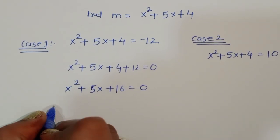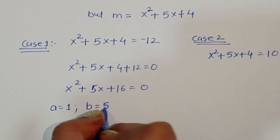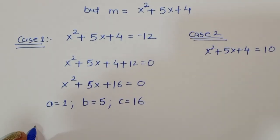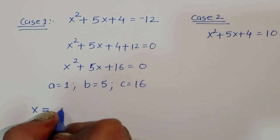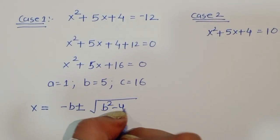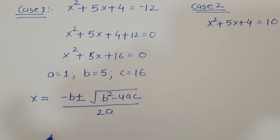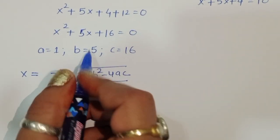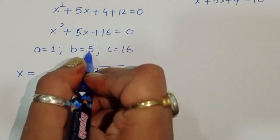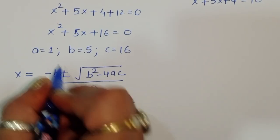For x² + 5x + 16 = 0, using the quadratic formula: a = 1, b = 5, c = 16. So x = (-b ± √(b² - 4ac)) / 2a.